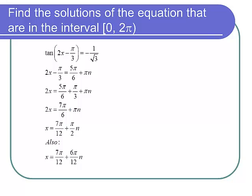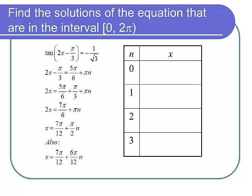Then I set 2x minus π over 3 equal to that. I add π over 3. I divide by 2. I get 7π over 12 plus π over 2 n. And then I do myself a favor. I get a common denominator. And the reason I get a common denominator is because I'm going to be chucking values in for n.